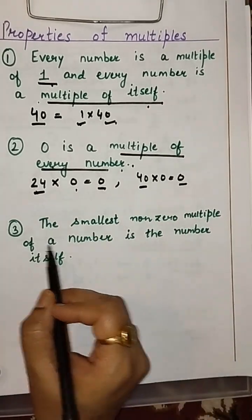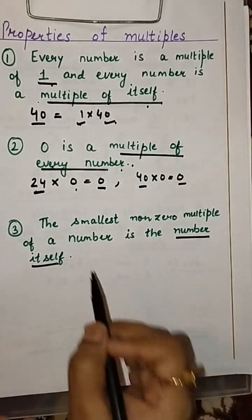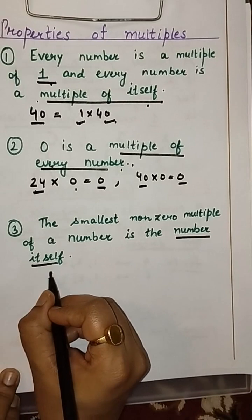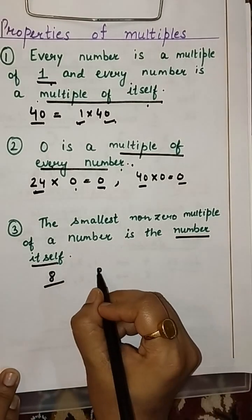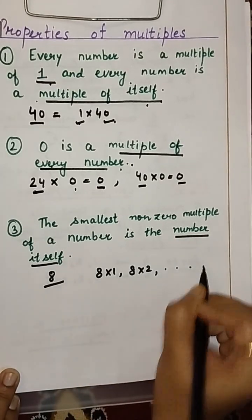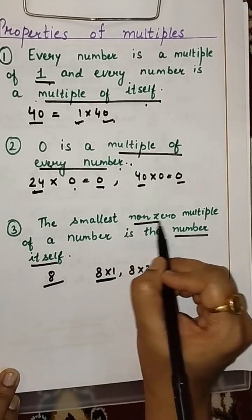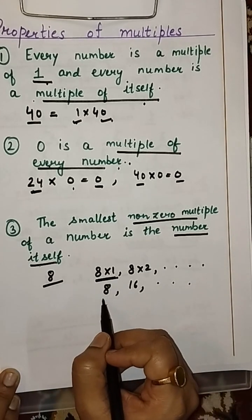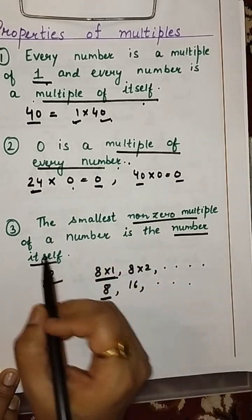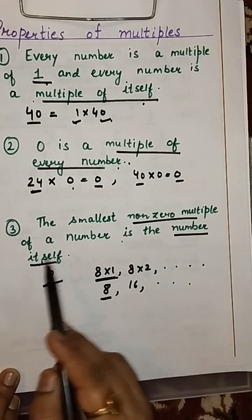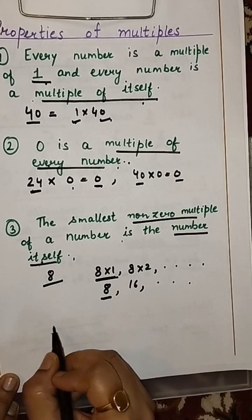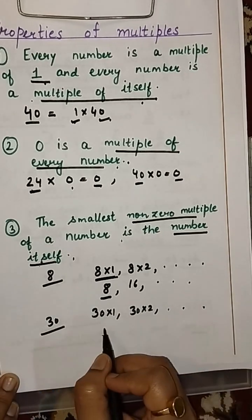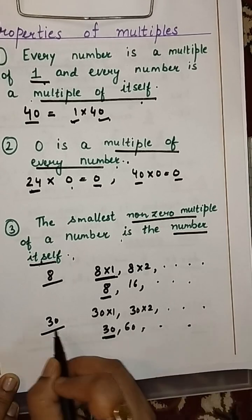Third property: the smallest non-zero multiple of a number is the number itself. When finding multiples of 8, we start with 8 into 1, 8 into 2, and so on. So the smallest non-zero multiple is the number itself — 8. Similarly, for 30, multiples are 30, 60, and so on — the smallest is 30 itself.